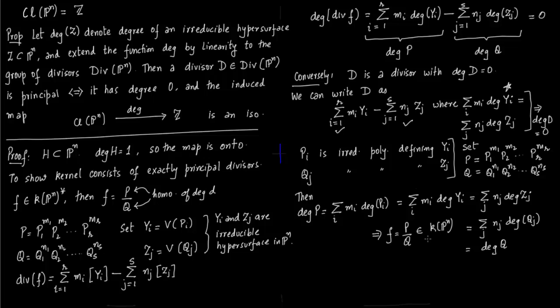So we can say P by Q lies in K(P^n) because now it is a fraction of degree zero. Degree of numerator is equal to degree of denominator. And you can see divisor of F is D. The important thing we have shown is that every divisor of degree zero is principal.